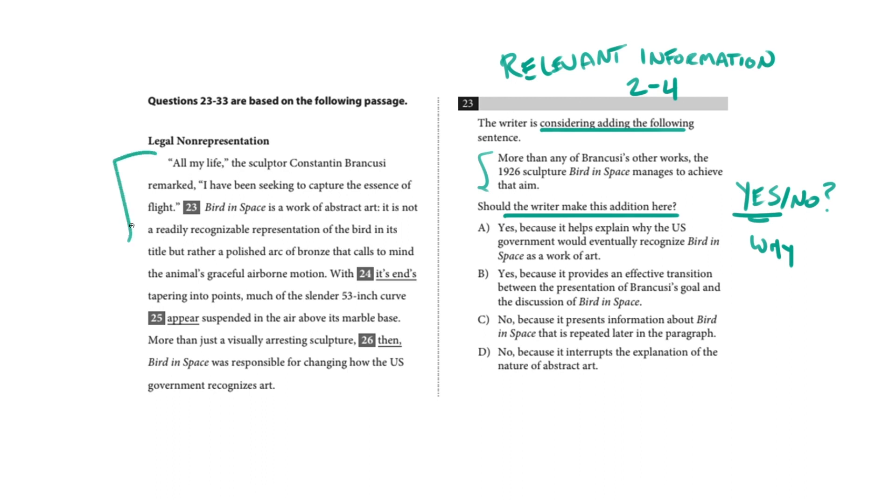All my life, the sculptor Constantine Brancusi remarked, I have been seeking to capture the essence of flight. And the sentence, whatever it is, would go in here. Bird in Space is a work of abstract art. It is not a readily recognizable representation of the bird in its title, but rather a polished arc of bronze that calls to mind the animal's graceful airborne motion. All right, I'll stop there.